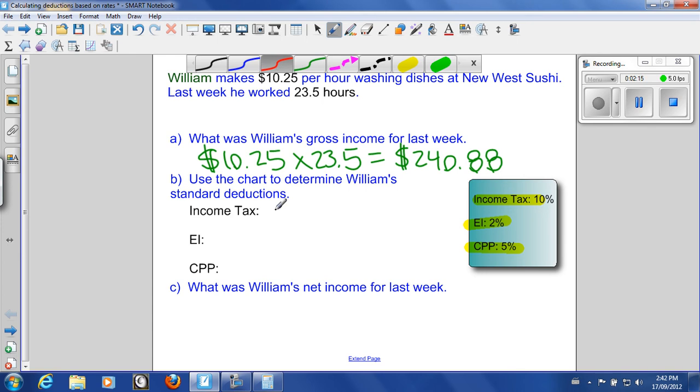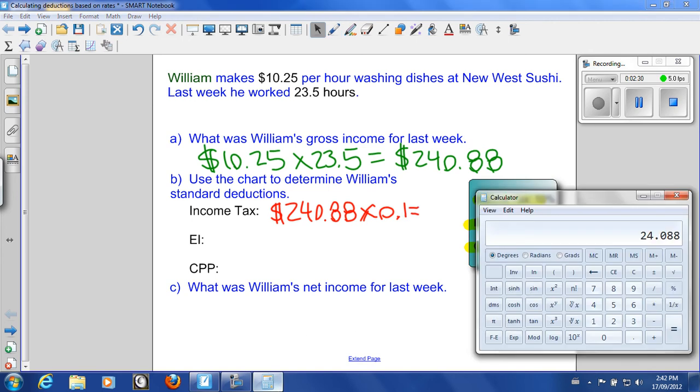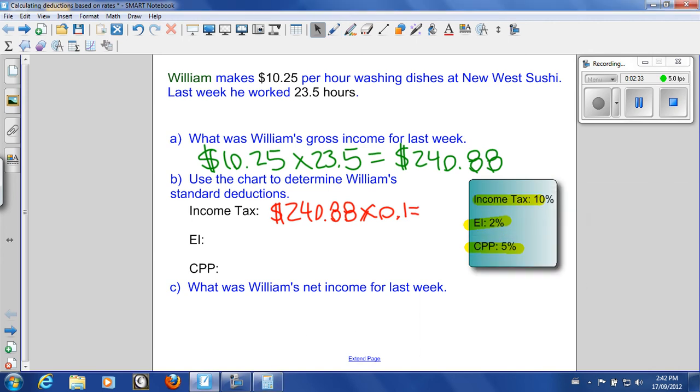So what do we do? We took the $240.88 and we multiply that by 0.1 and that gave us $24.09.